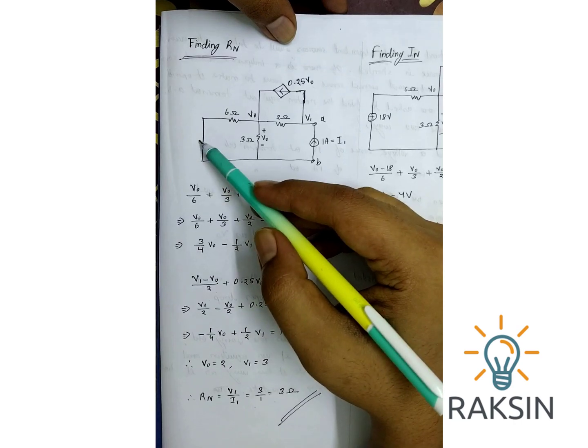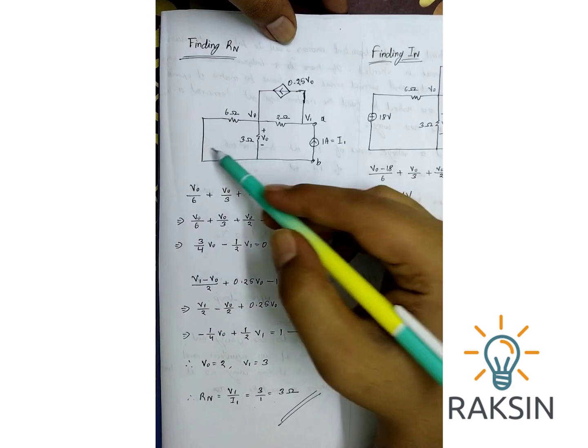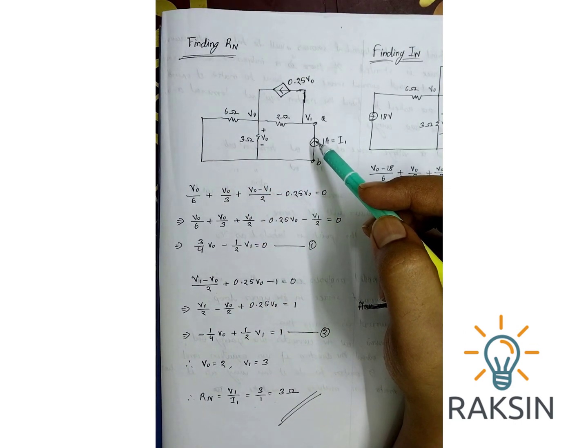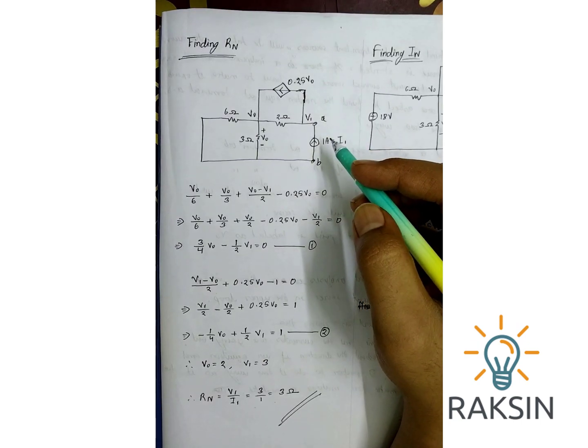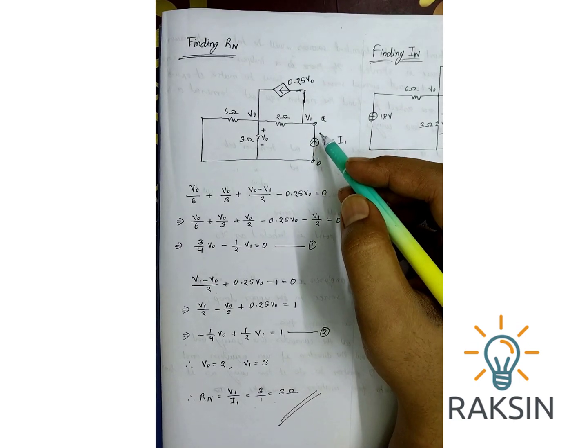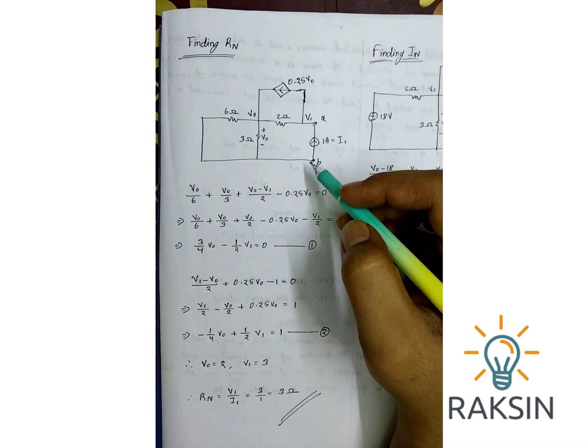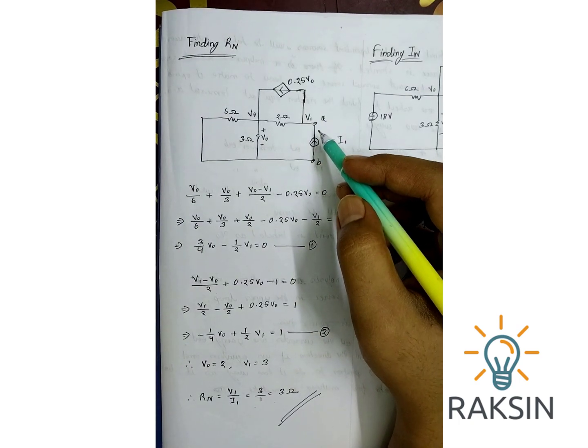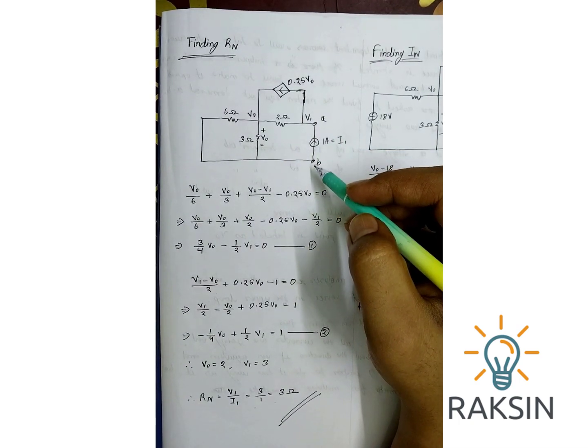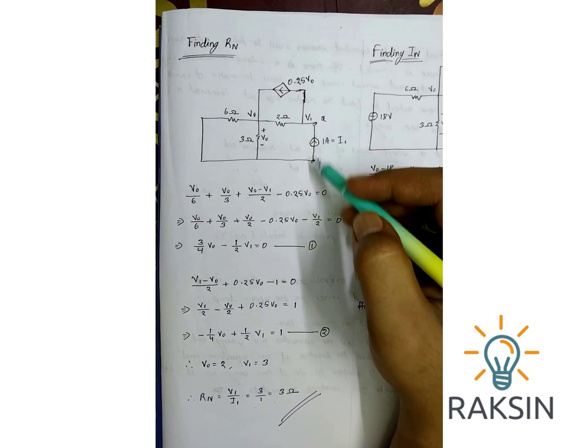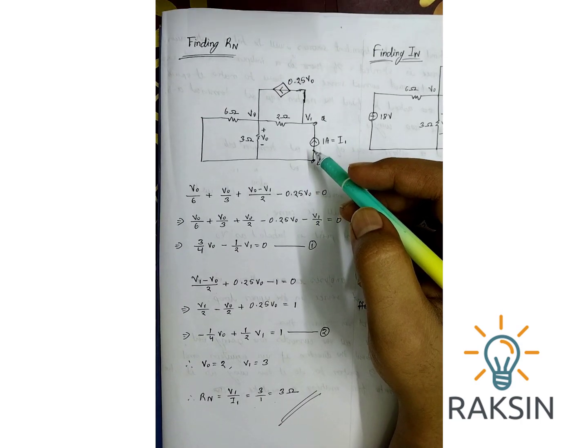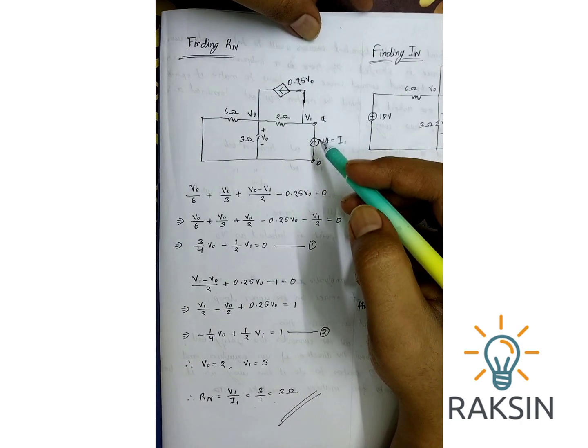Now there are two ways to approach: one is adding a 1 ampere current source at terminal AB as they have asked us to find the Norton equivalent at terminal AB, or we can add 1 volt voltage source at terminal AB. You can do it anywhere you want, but in this case I have chosen to do it with a 1 ampere current source.